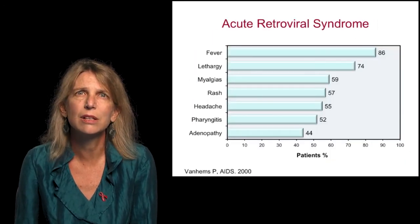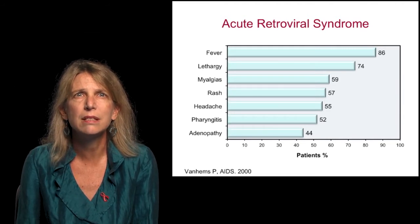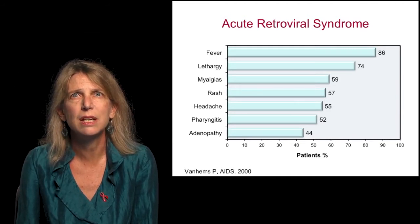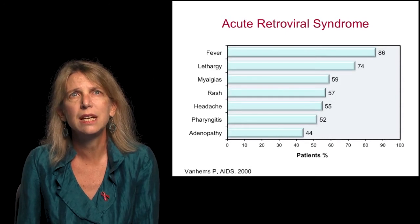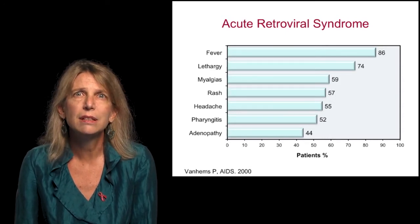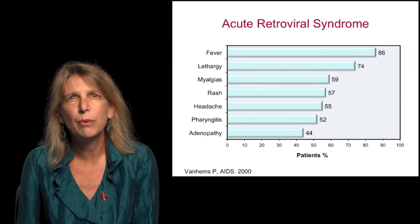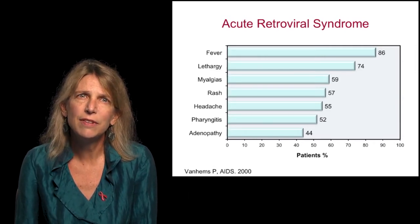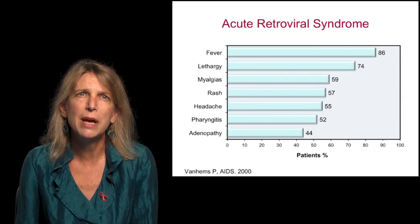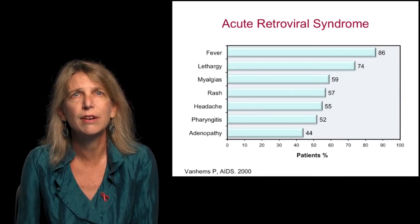What are the most common clinical manifestations of the acute retroviral syndrome? In one series, fever was the most common manifestation, present in 86% of patients. Lethargy or fatigue in 74%, myalgias, rash, headache, and pharyngitis in about half of the patients. Diffuse lymphadenopathy is also very common in the acute retroviral syndrome.